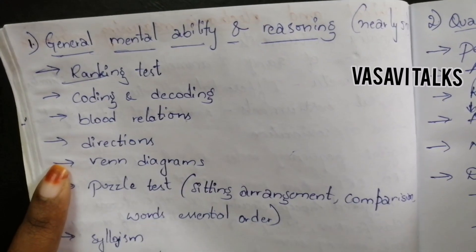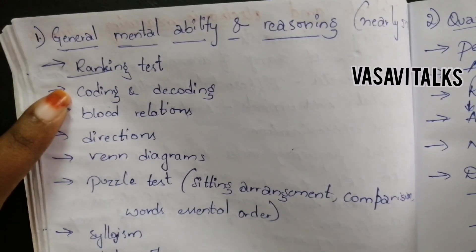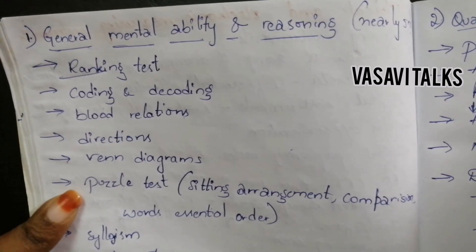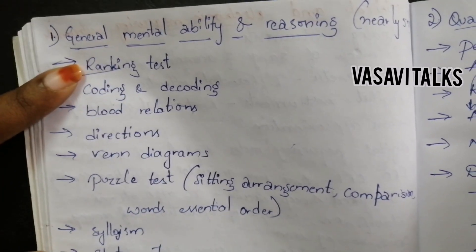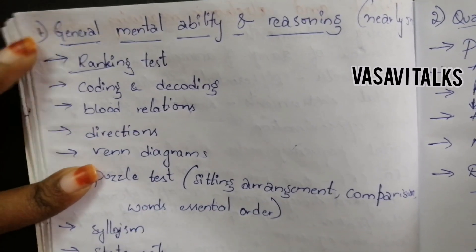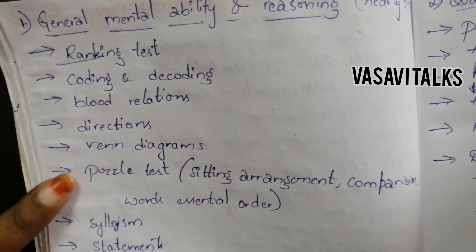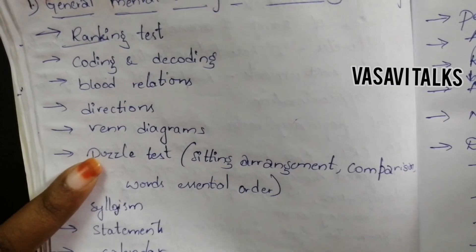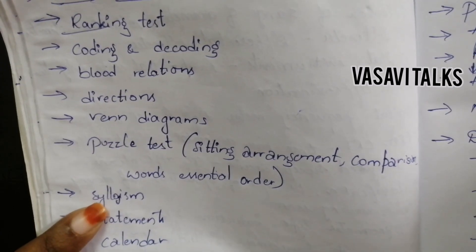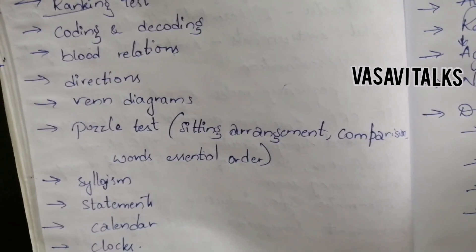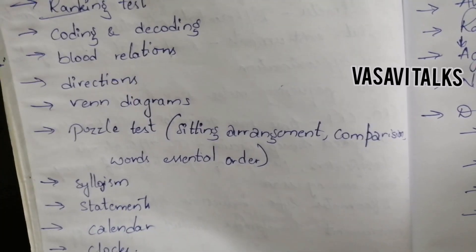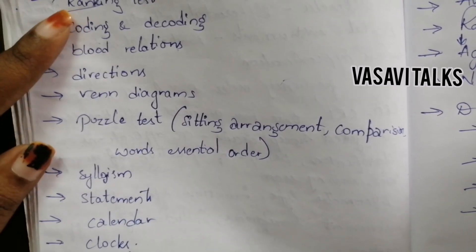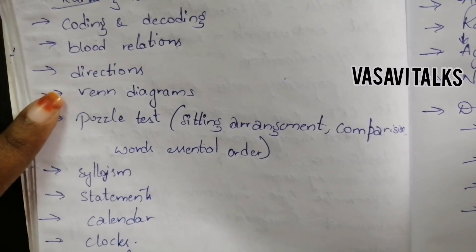The next topics are coding and decoding — including number coding and letter coding — blood relations, directions, Venn diagrams, and puzzle test. These are the main important topics: ranking test, coding and decoding, blood relations, directions, and Venn diagrams.